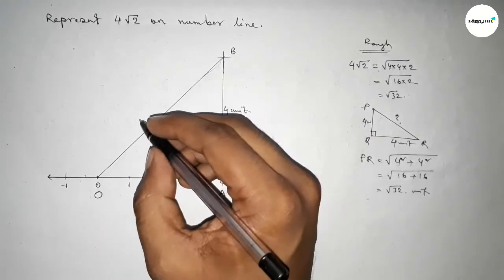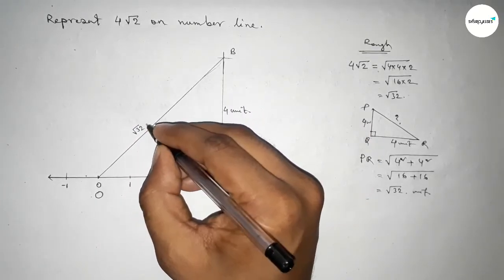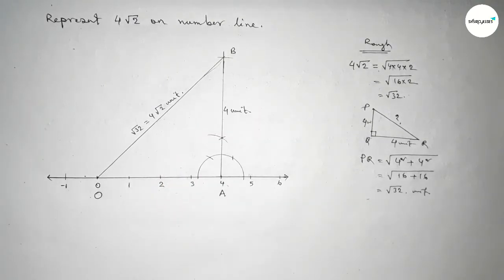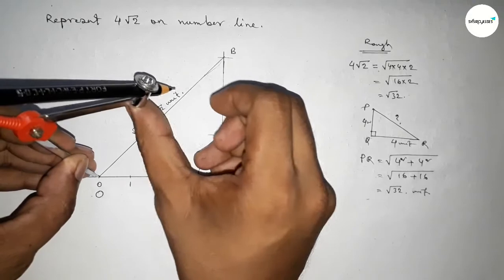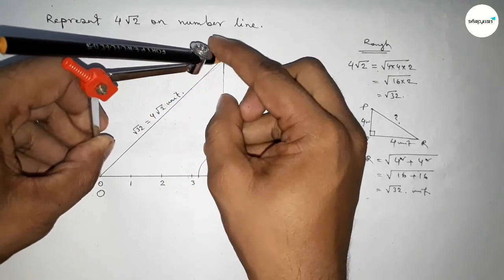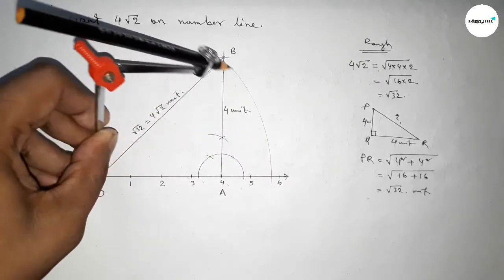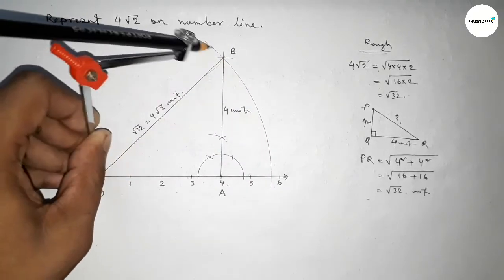So now from right angle triangle OAB, so this is hypotenuse, so this is obviously root 32 and this is 4 root 2 unit. Now taking this length by using compass by this way and now drawing here an arc by this way.